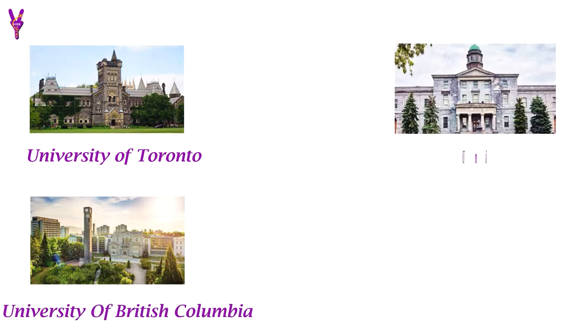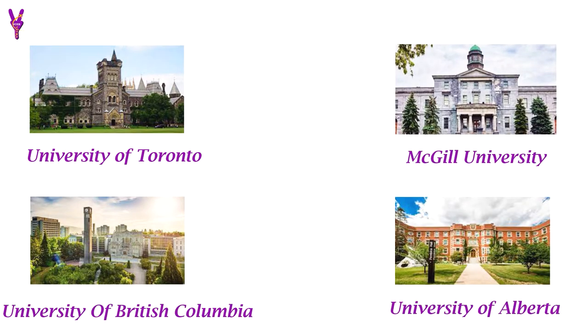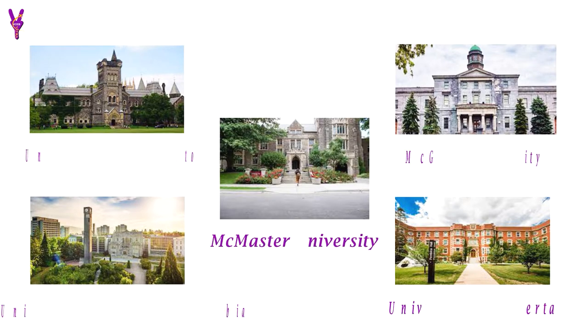Next is college selection. Canada has many top-ranked colleges. From the top 100 college list, some notable ones are: University of Toronto, University of British Columbia, McGill University, University of Alberta, and McMaster University.